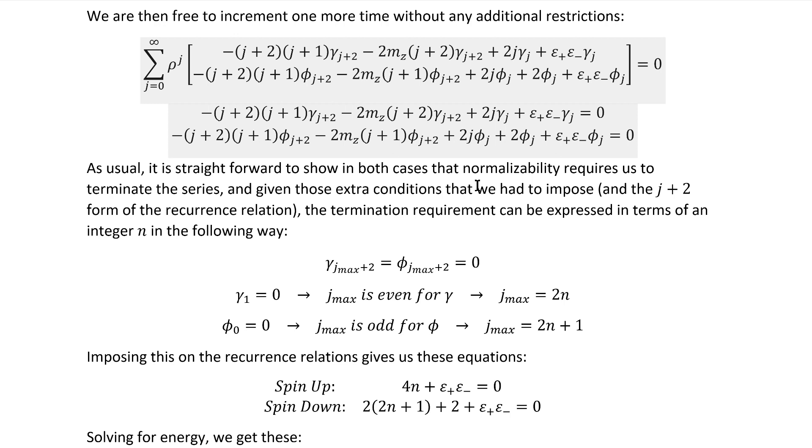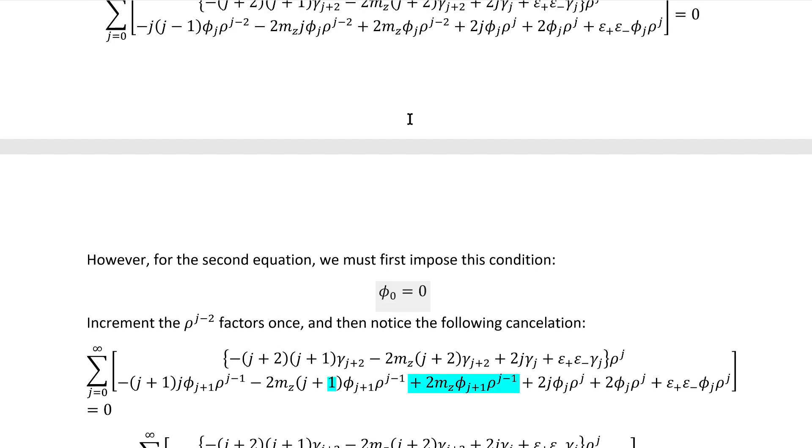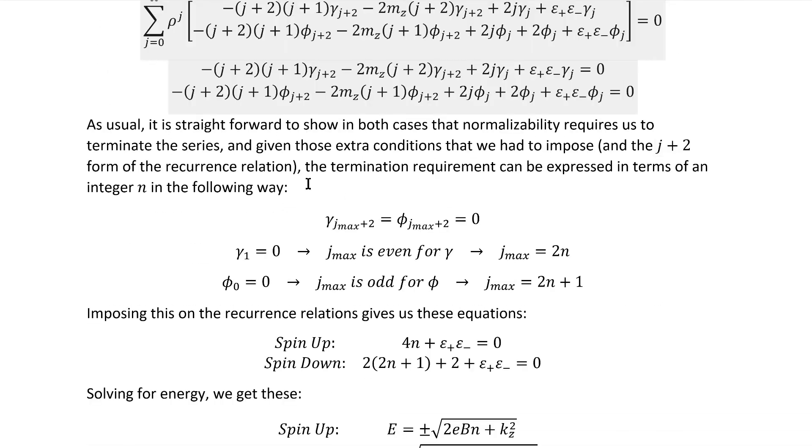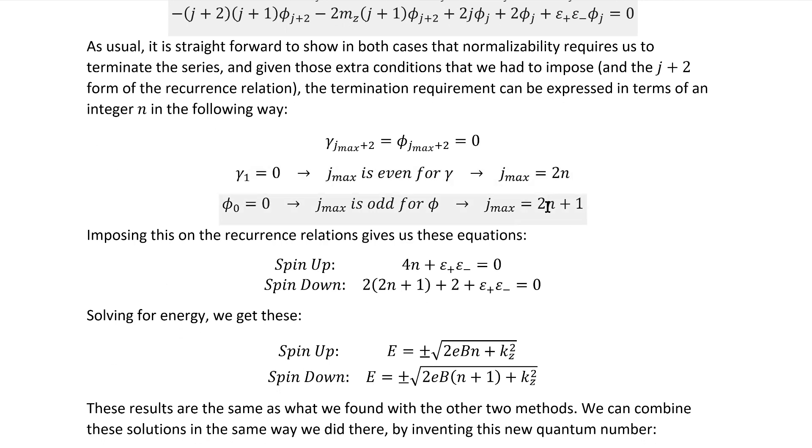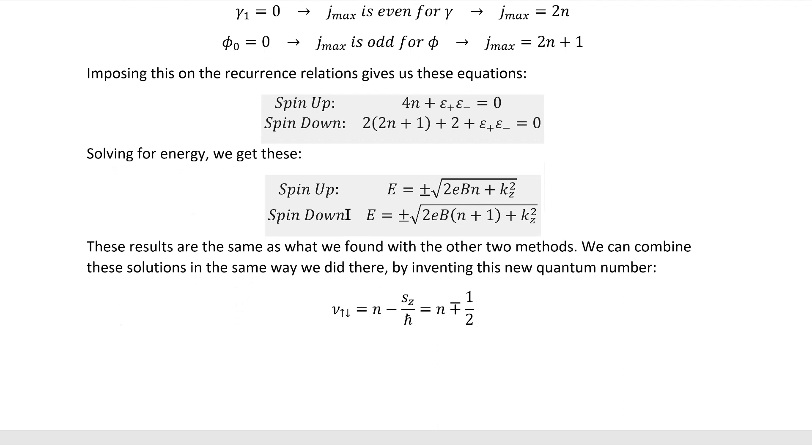As usual, it's straightforward to show in both cases that normalizability requires us to terminate the series. And given those extra conditions that we imposed right here and up here and the j plus two form of the recurrence relations, the termination requirements can be expressed like this. Notice that we have these expressions here for j max in terms of a general integer. That's where the factor of two ends up coming from, quite obviously in this case, but it's even cooler in the phi case. Inserting that gets us here initially and solving for energy leaves us here. Notice how we can bring this factor of two in and well, we have a factor of two up front, but then the one that results combines with that one to create another factor of two so we can factor it out and get a four. And so when a factor of two disappears all across, we still have the factor of two we need. And that way of the factor of two coming out, you know, was a little treat as the end of figuring out something of a tricky Dirac equation problem. It meant something to me anyway.